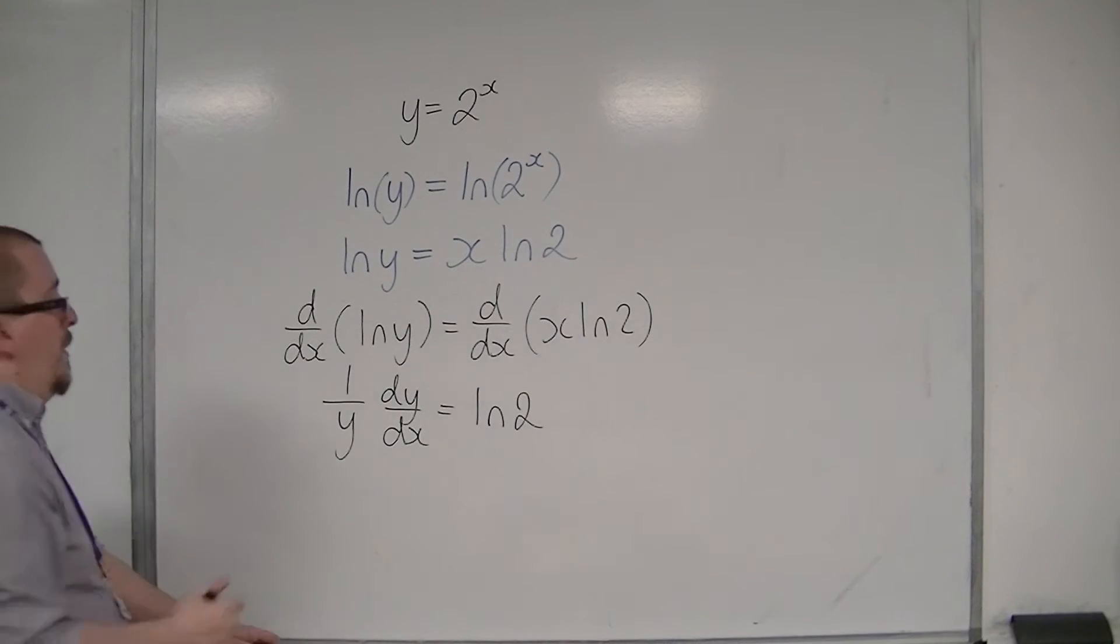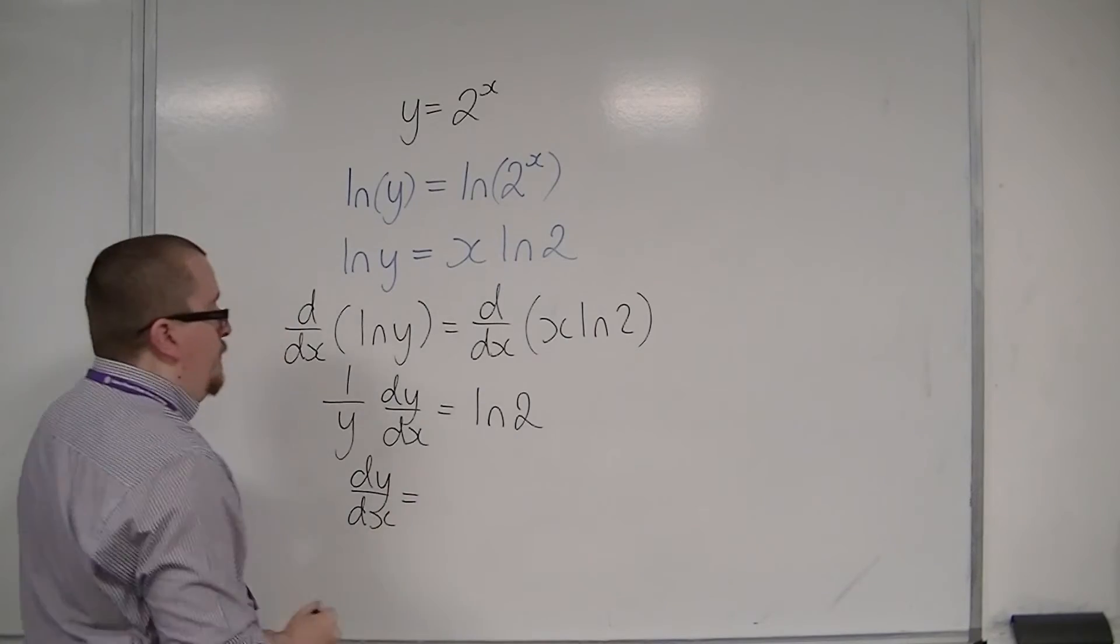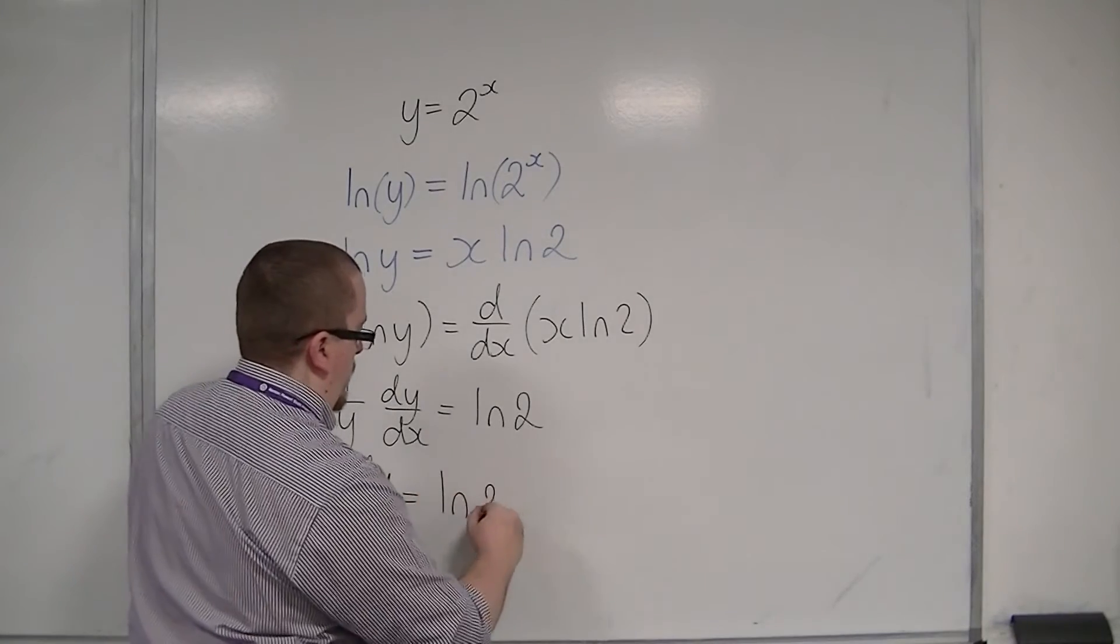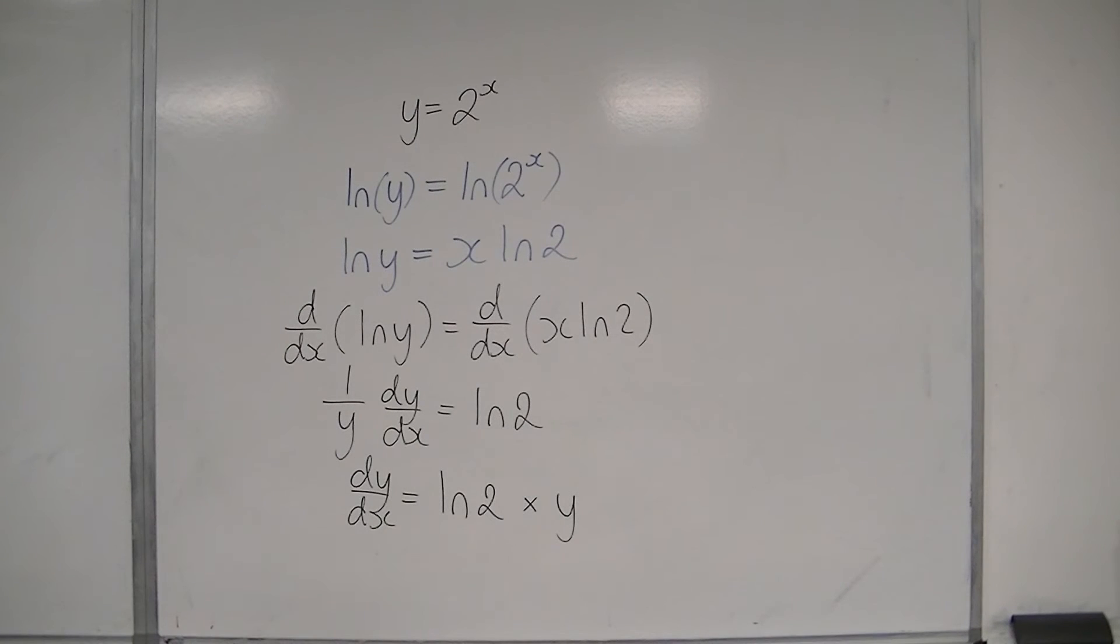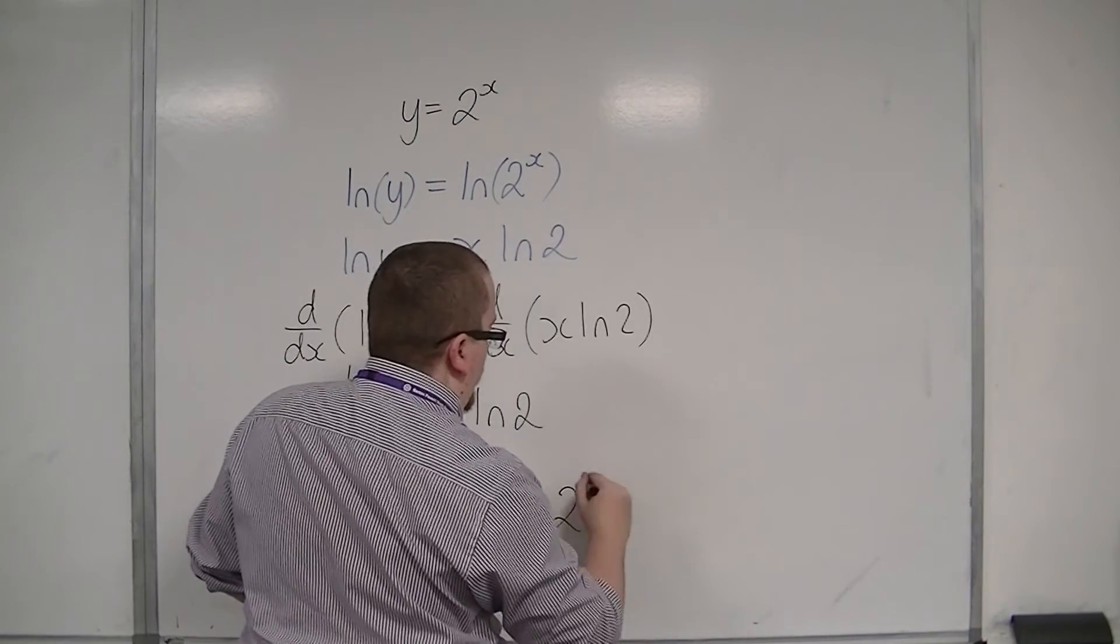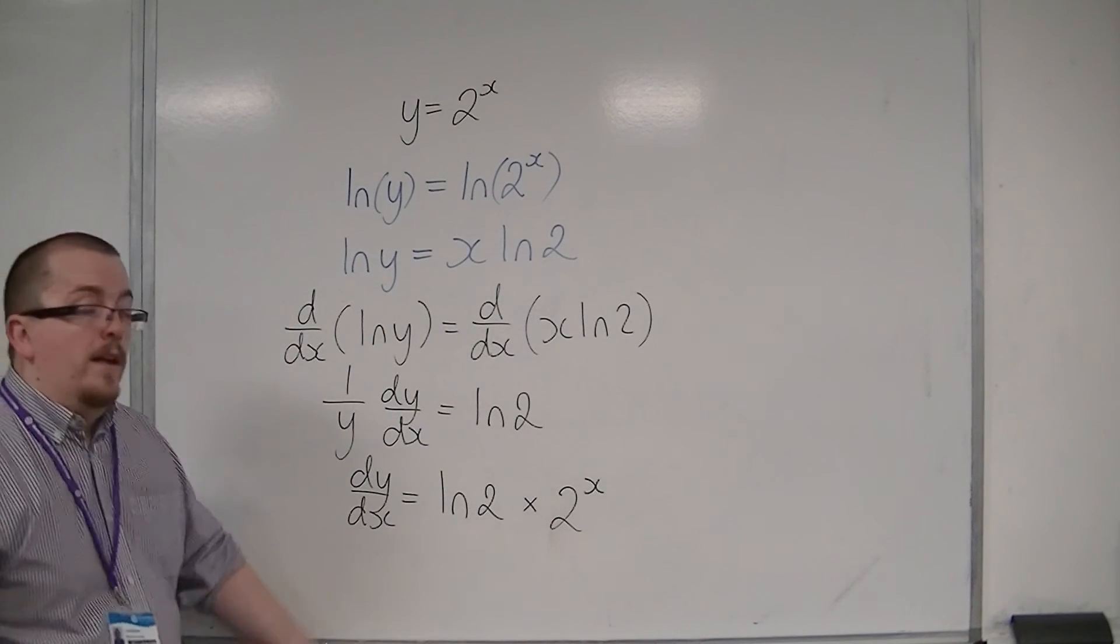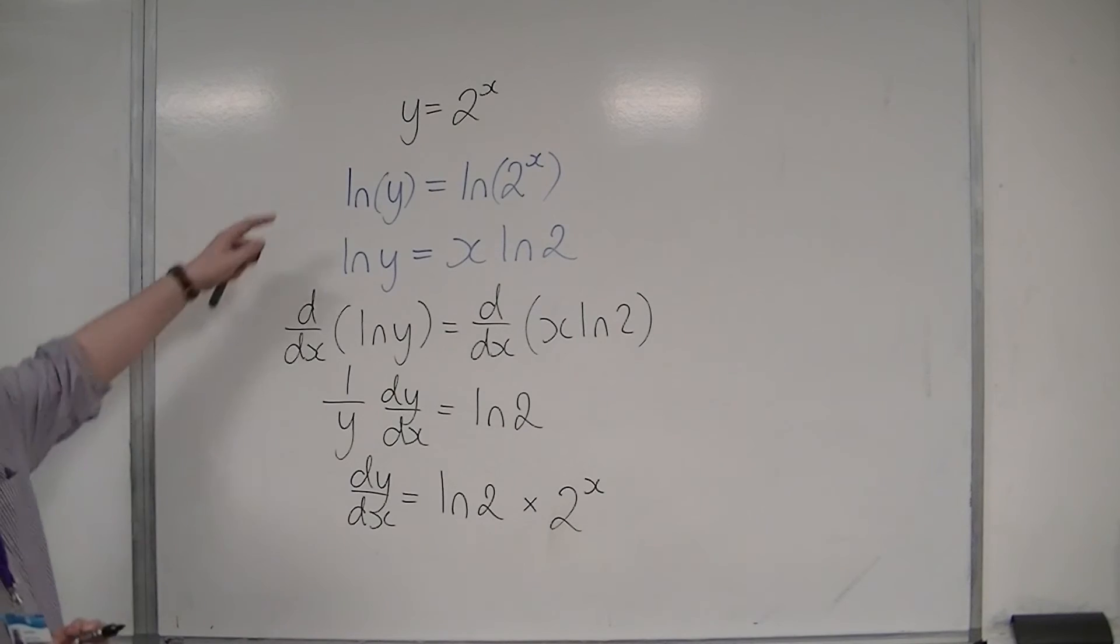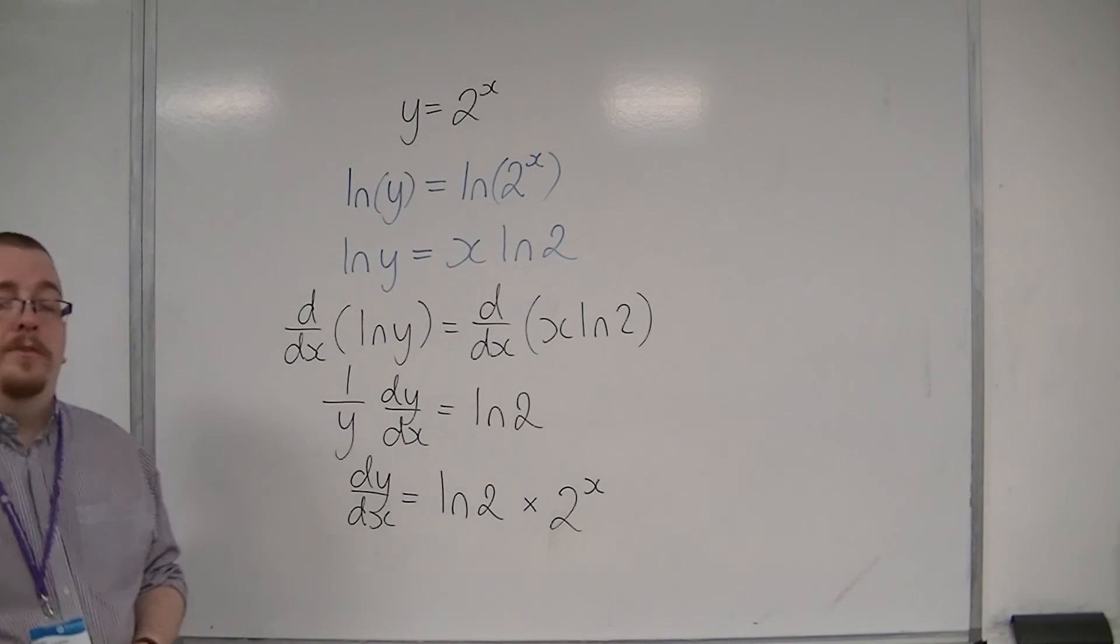Then I can multiply both sides by y. So I end up with dy by dx is log 2 times y. But then, y was 2 to the x. So if I replace the y with 2 to the x, then I have what I could write down as my final answer. The derivative of 2 to the x is log 2 times 2 to the x.